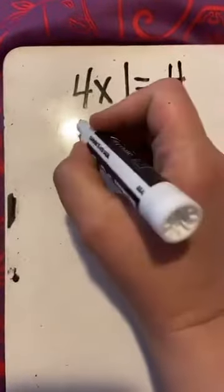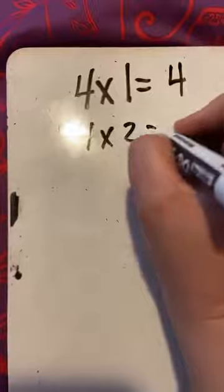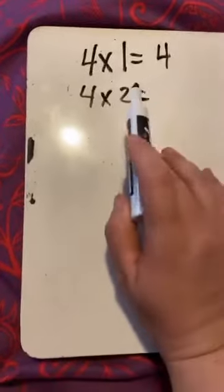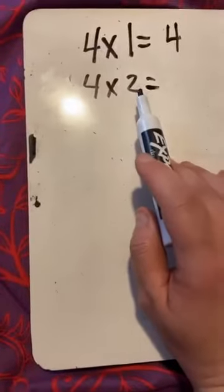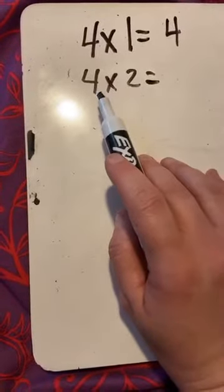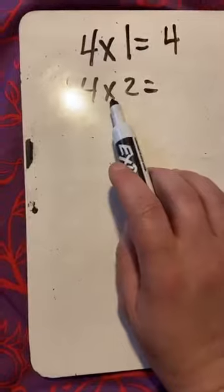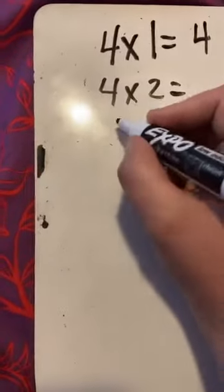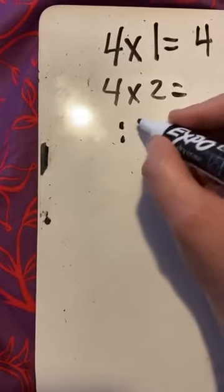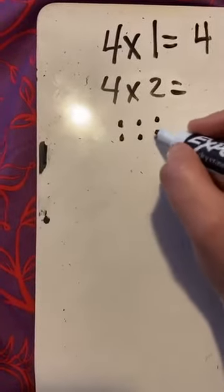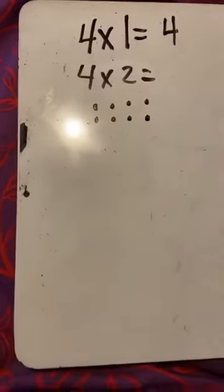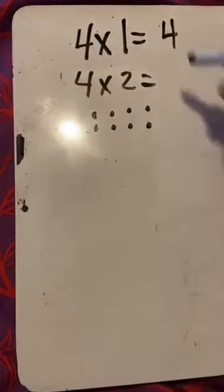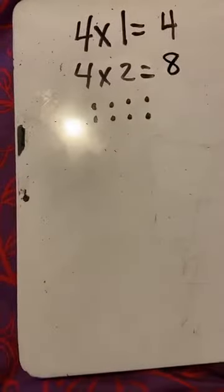Let's go to the next one. 4 times 2. How many groups do I have? This one's tricky. How many groups do I have? Well, you can do it this way or you can do it this way. I have 4 groups with 4 equal groups with how many in them? 2. So let's draw my 4 equal groups with 2. There's 1, 2, 3, and 4. So how many do I have? 2, 4, 6, 8.